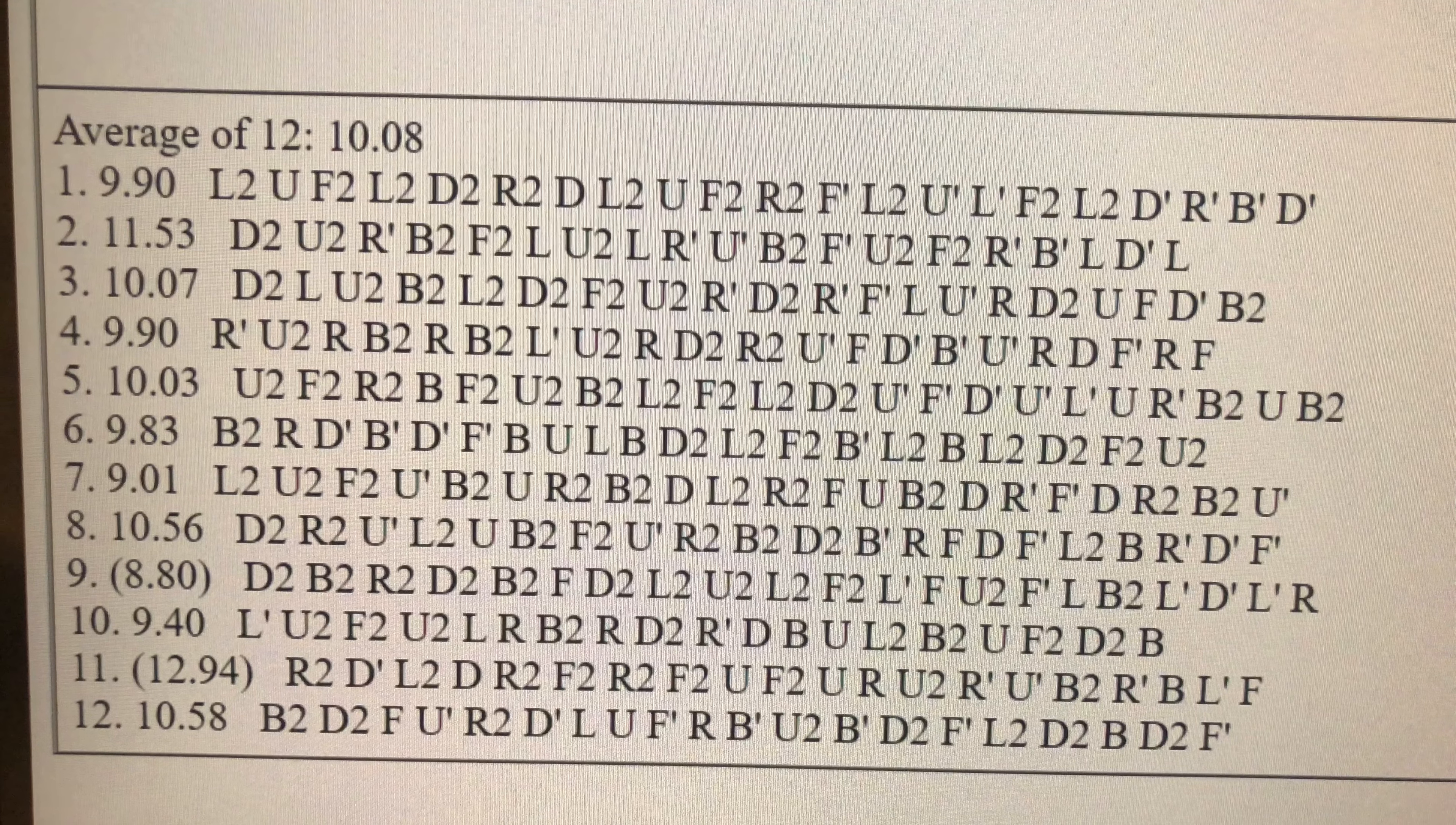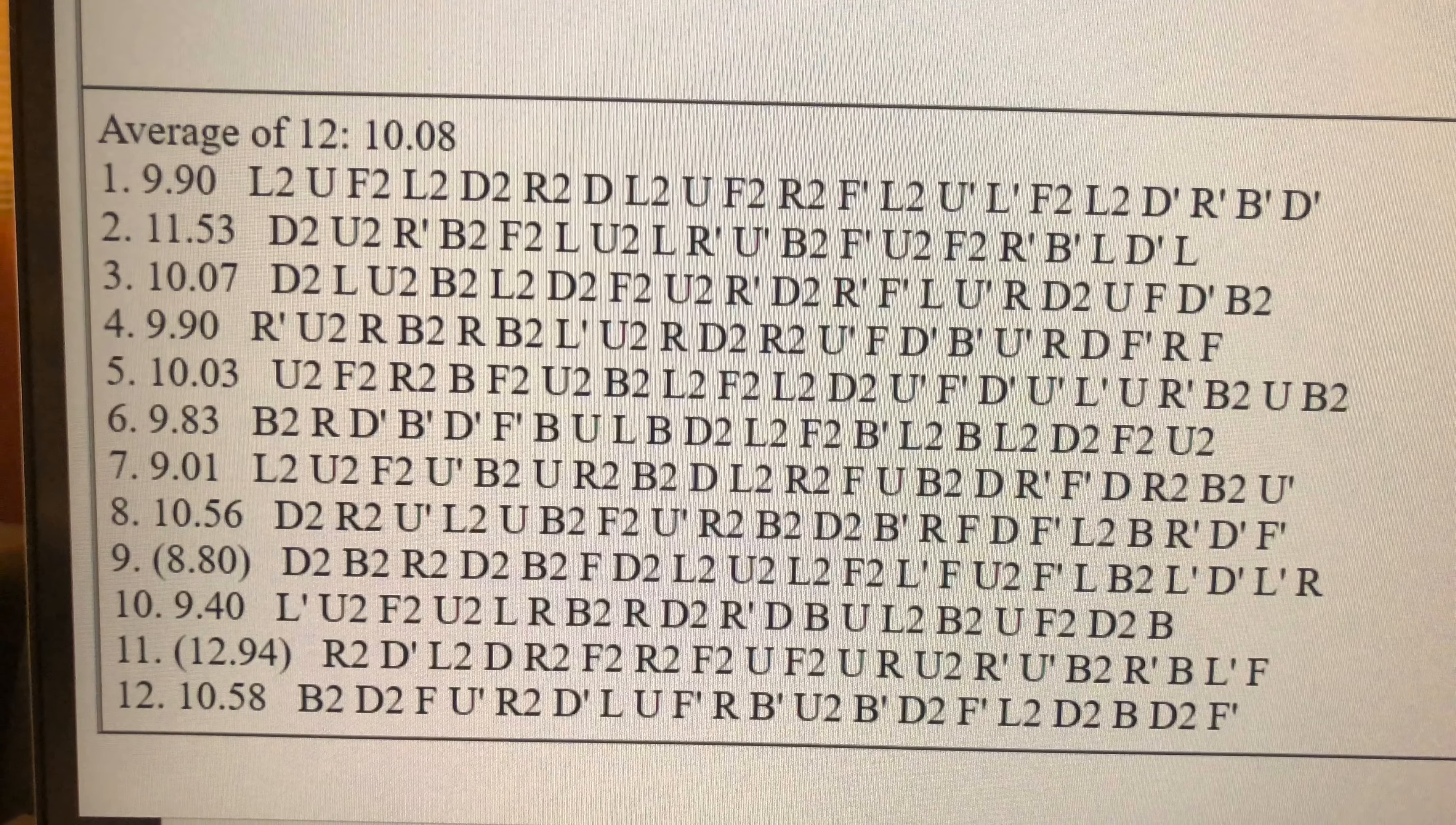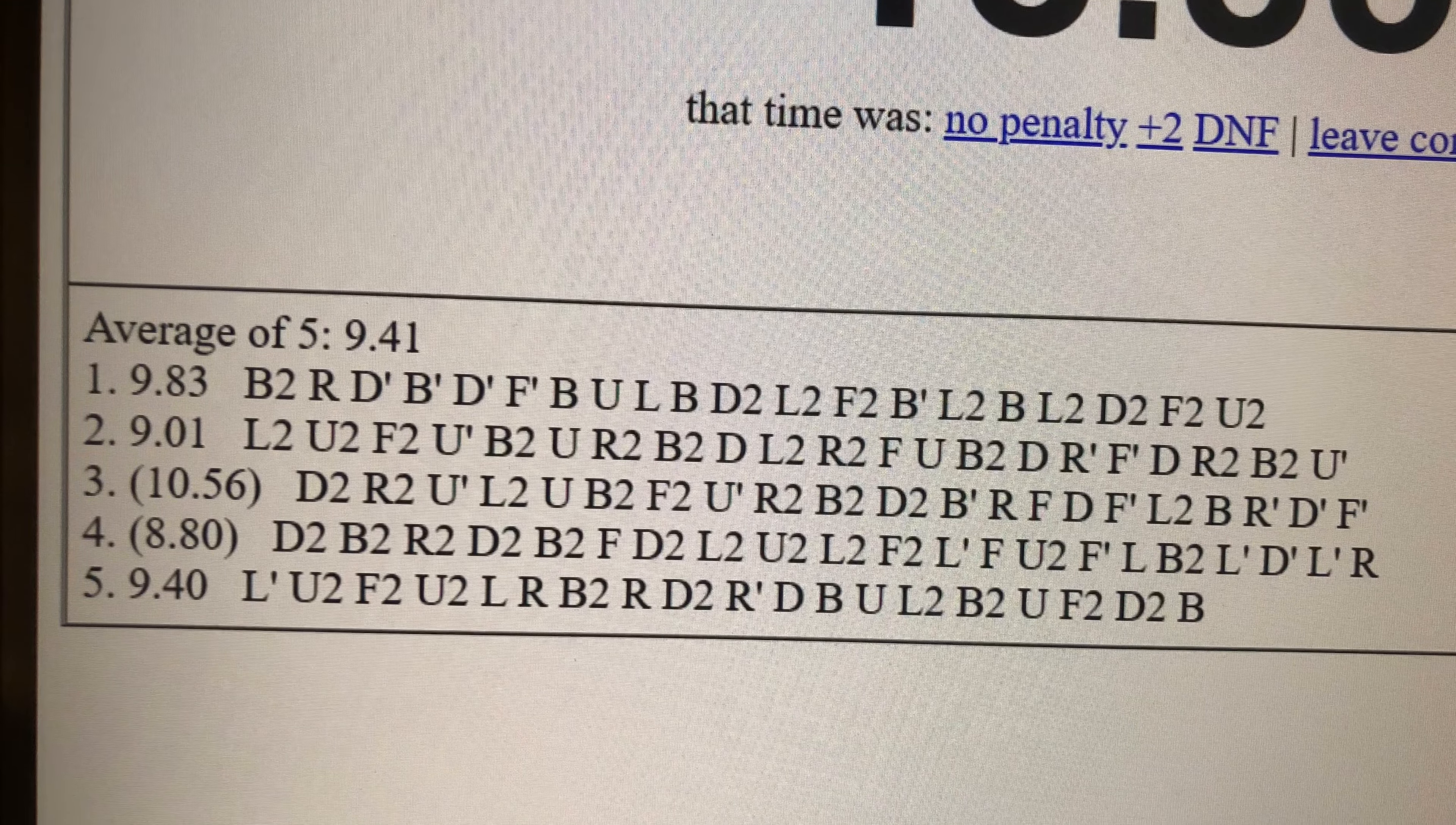Here are the scrambles of the average of 12 if you want to try them yourself, because they are luckier than average. Solves 6 through 10 make up the fastest average of 5, which is my PB now of 9.41.